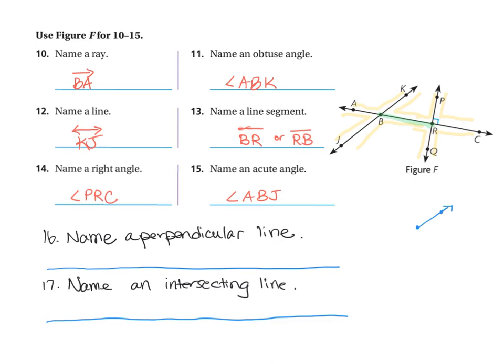When you're identifying a lot of different things in a figure, some of these letters get repeated. I have point A in several of my problems — here, here, and here — and that's okay. When you're doing a figure, sometimes you use the points for more than one answer because a point is part of more than one figure element.